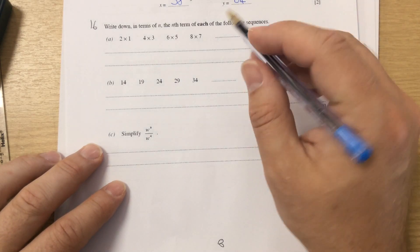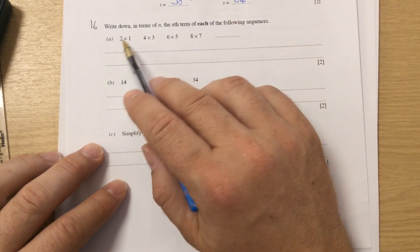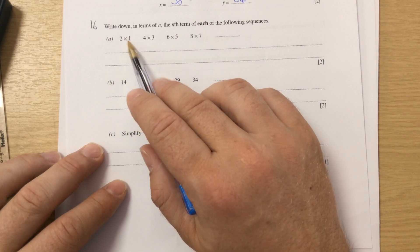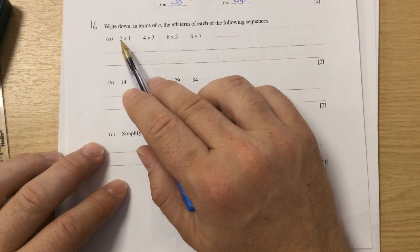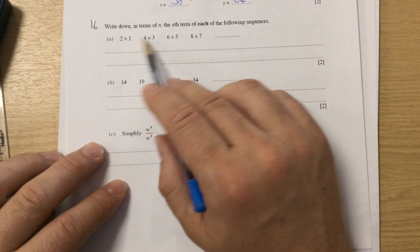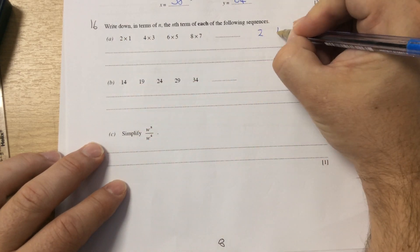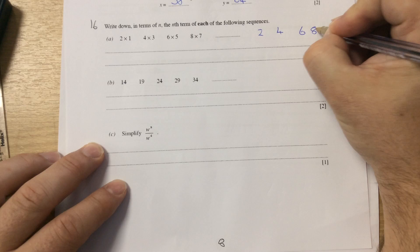All right, write down in terms of n, the nth term of each of the following sequences. So what we have here is something multiplied by something. The first thing I would look at there is look at your first number. Your first number is 2, 4, 6 and 8.